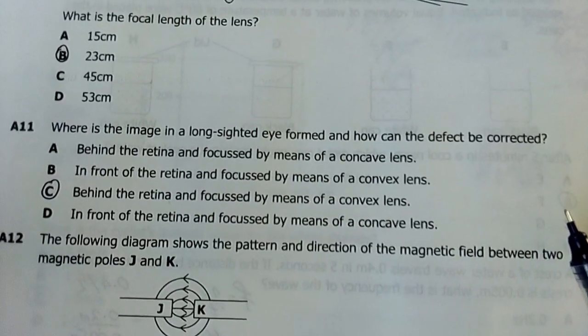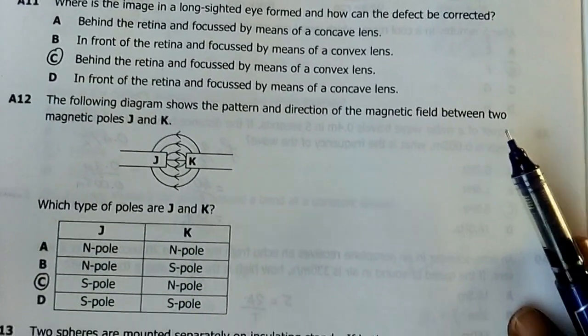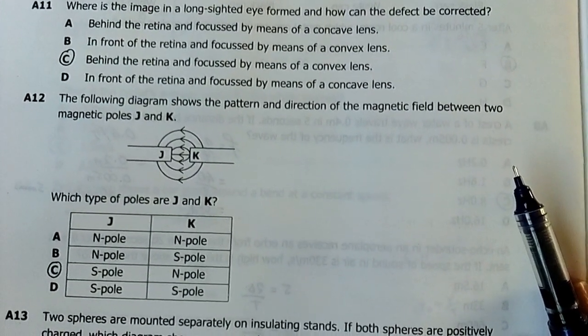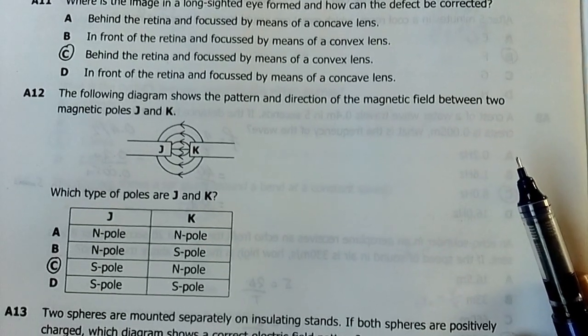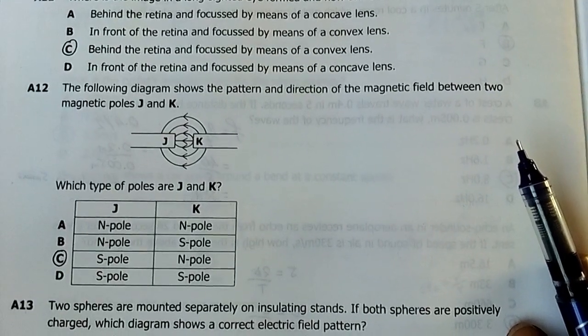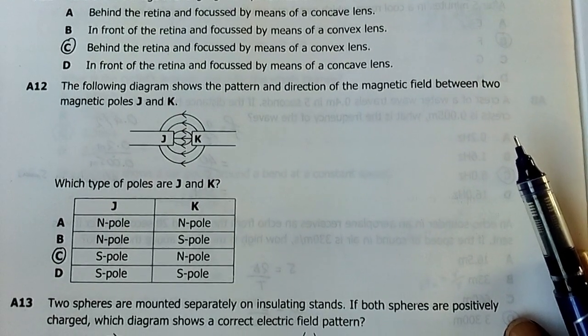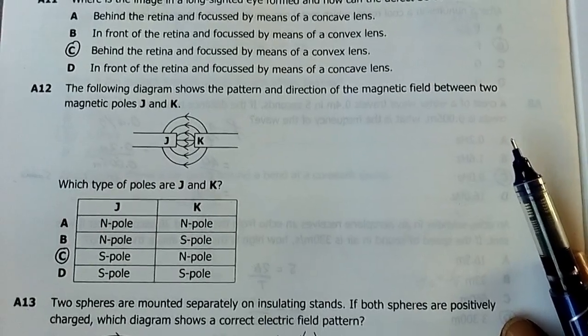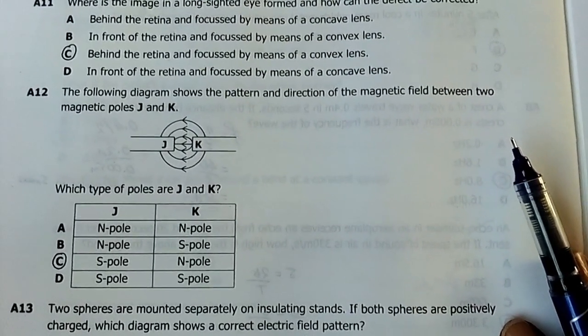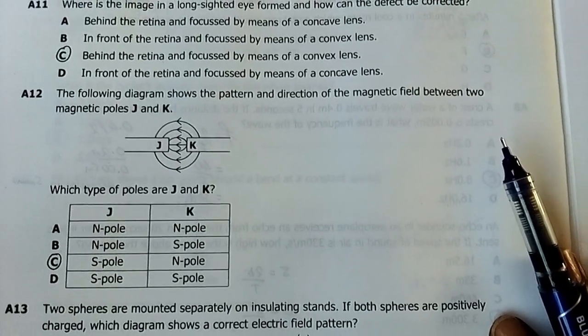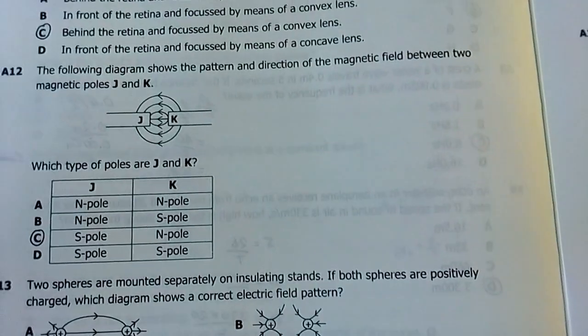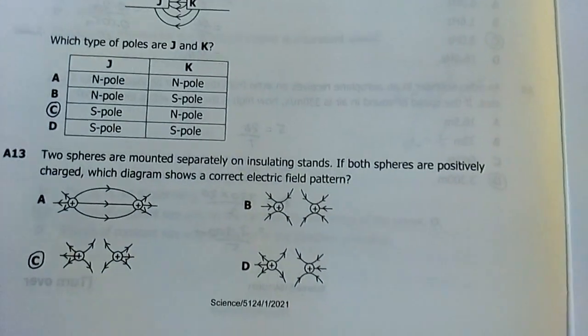Number 12: The following diagram shows the pattern and direction of the magnetic field between magnetic poles J and K. Which type of poles are J and K? My answer is C. The south pole is the pole to which the magnetic field lines are drawn to be projected to, and the north pole is the pole from which the magnetic field lines are drawn to be emanating from. The arrows are drawn to come from the north going to the south.